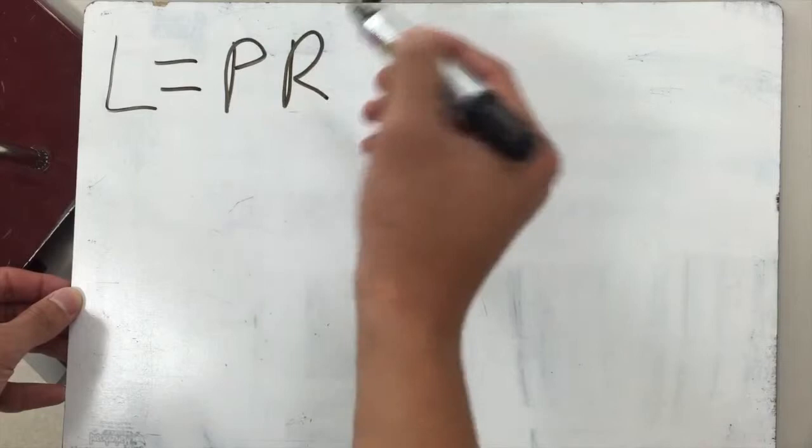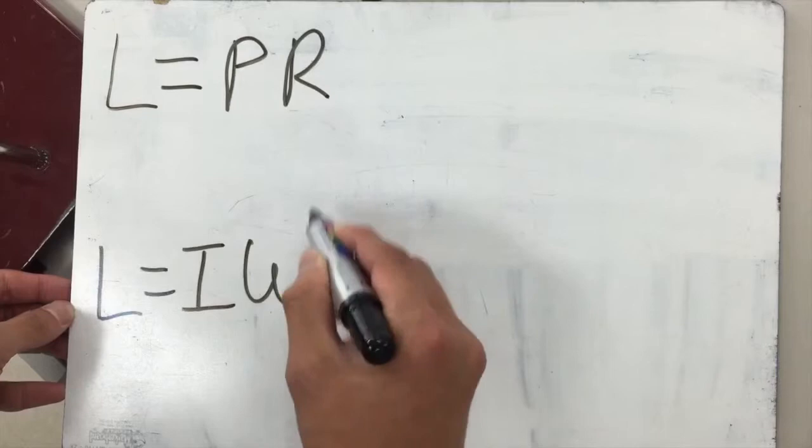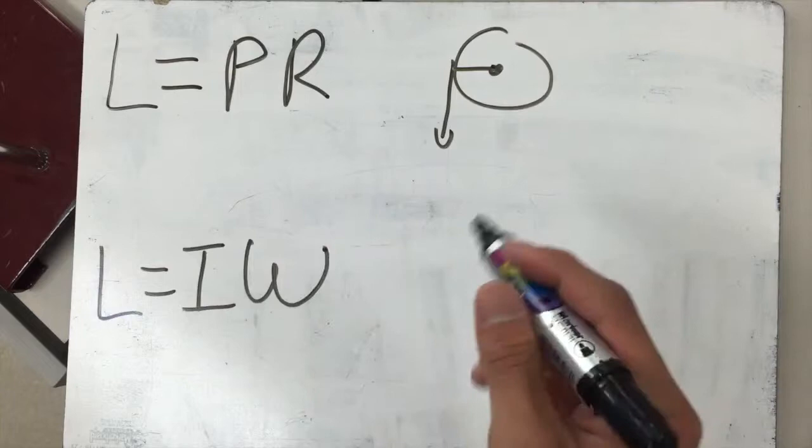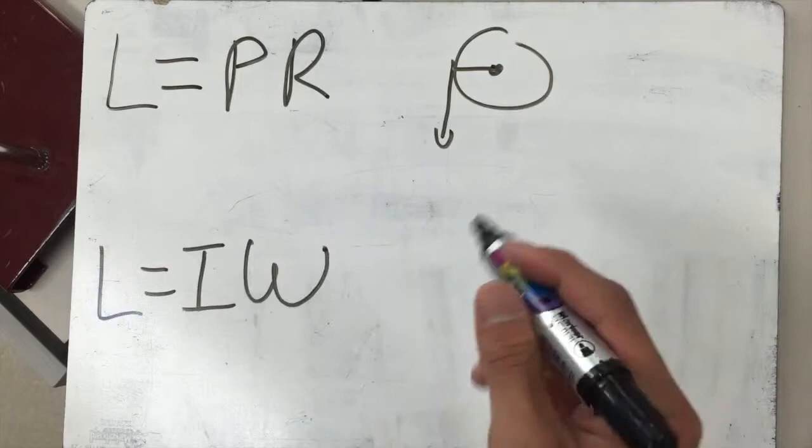Now, for angular momentum, there are two possible equations that can be used. Angular momentum equals linear momentum times radius, or rotational inertia times angular velocity. Now, how does rotational inertia and angular velocity work? I'll show this all algebraically.